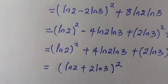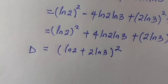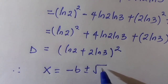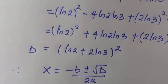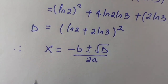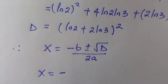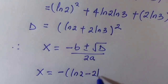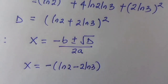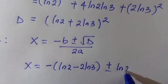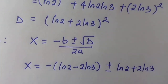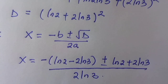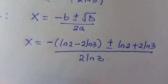We substitute into the quadratic formula: x equals minus b plus or minus square root of discriminant, divided by 2a. Since the discriminant is (ln 2 plus 2 ln 3) squared, the square root cancels the square, giving ln 2 plus 2 ln 3. We substitute b equals ln 2 minus 2 ln 3, so x equals minus(ln 2 minus 2 ln 3) plus or minus (ln 2 plus 2 ln 3), all divided by 2 ln 3.